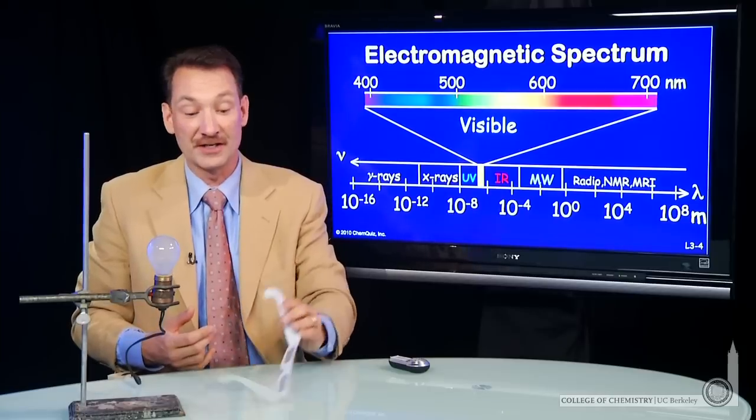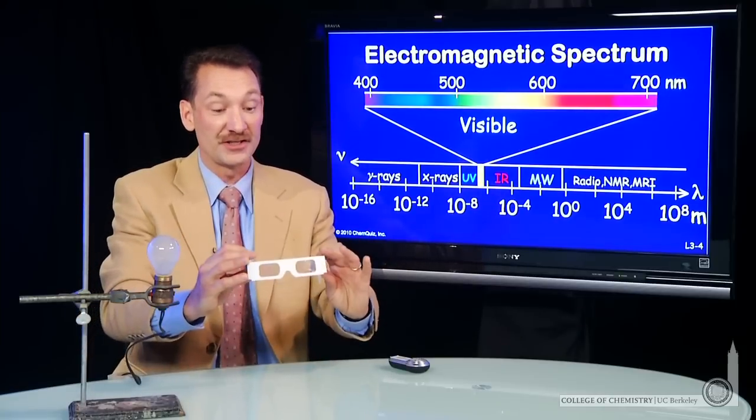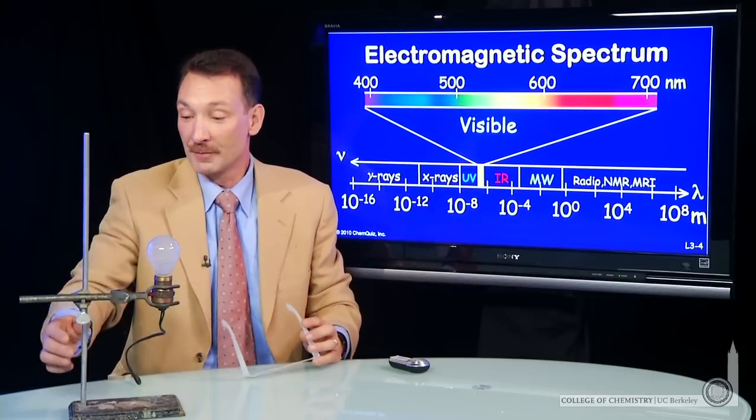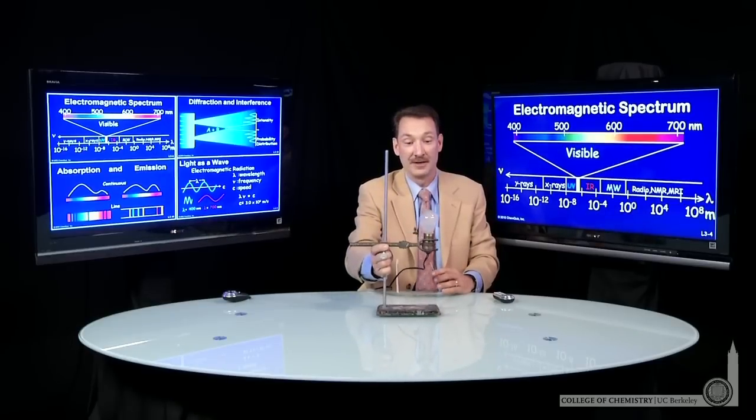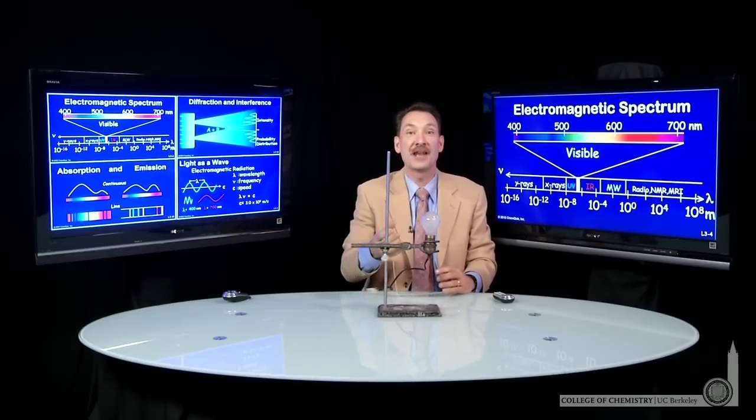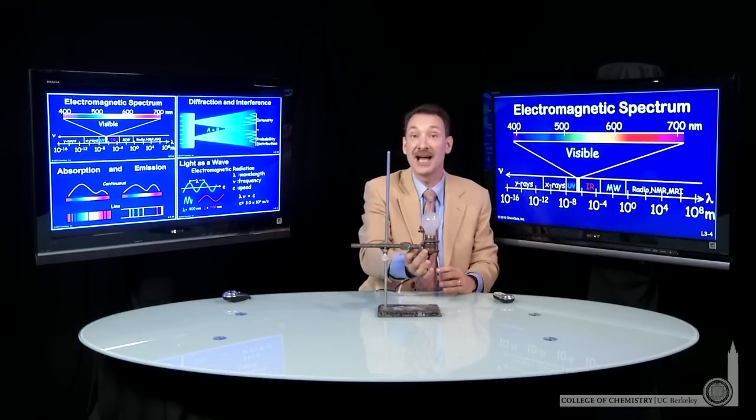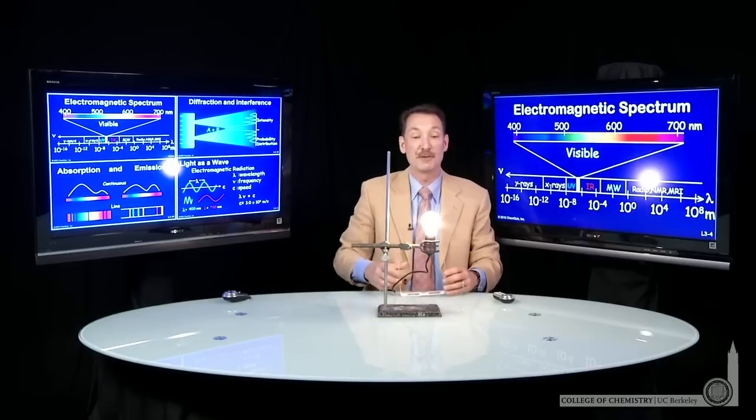And we can actually do that. Diffraction gratings are cheap and easy to make. There's actually some in these glasses here. What I'm going to do is take this white light source, turn that on, and we'll put on these diffraction glasses, and we'll be able to see when we look at the light,